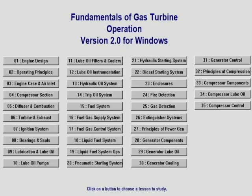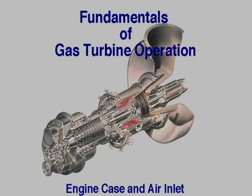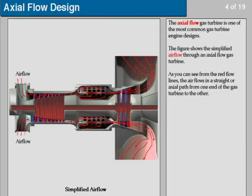Previous lessons described the design of a simple gas turbine engine, the way it functions, and the physical laws that affect its operation. This lesson builds on those concepts and describes the components of the engine case and the air inlet system of an axial flow gas turbine engine. The axial flow gas turbine is one of the most common gas turbine engine designs.